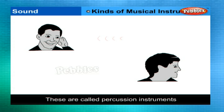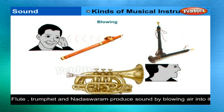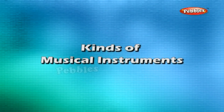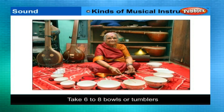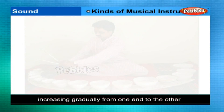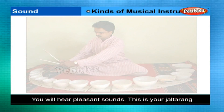Blowing: musical instruments like flute, nataswaram, trumpet, clarinet, etc., produce sound when air is blown into them. Take six to eight bowls or tumblers and fill them with water up to different levels, increasing gradually from one end to the other. Now take a pencil and strike the bowls gently in succession. You will hear pleasant sounds. This is your Jaltarang.